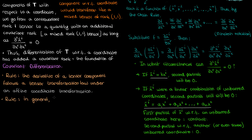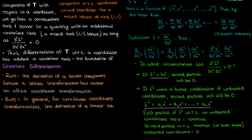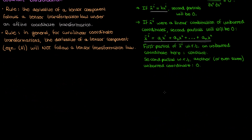In general however, for more curvilinear coordinate transformations — like going from Cartesian coordinates to polar coordinates — the derivative of a tensor component will not follow a tensor transformation law, because the mixed second partial term will be non-zero, which prevents us from reaching a transformation law in equation 3.